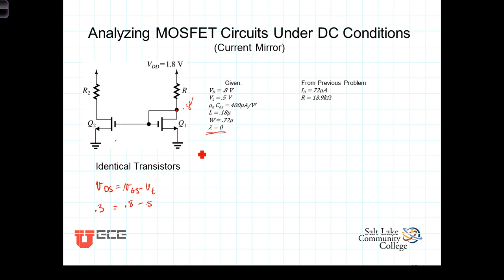And because of that, the current then for the non-early effect transistor is I sub D equals one half K sub N prime W over L times VGS minus VT quantity squared.